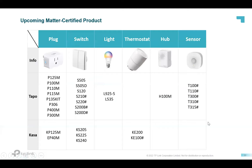Let's learn about TP-Link Matter products. TP-Link supports and plans to support Matter across a range of devices, including Kasa series plugs, Tapo series plugs, Kasa and Tapo switches, Tapo lights, Kasa thermostat, Tapo hub, and Tapo sensor. As of now, only the Tapo P125M has been released and sold in the market, with other models on the way.